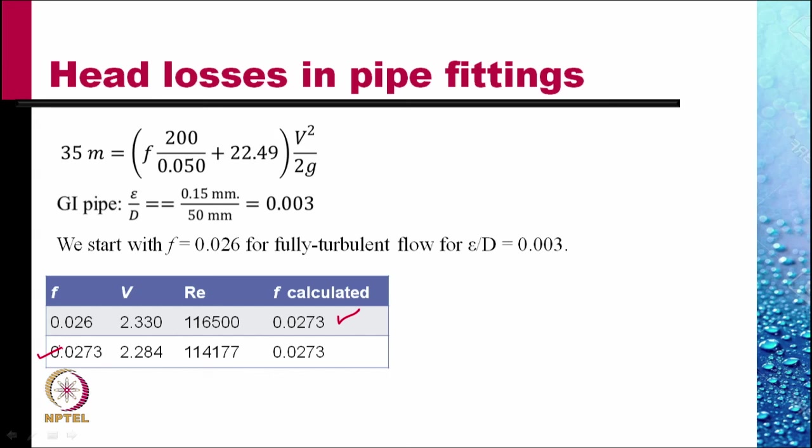In the next round the velocity now comes out to 2.284. The Reynolds number changes slightly but the value of f is unchanged and since the value of f is not changed our iterations are over and the results have converged. The value of velocity through pipe is 2.284 meters per second.